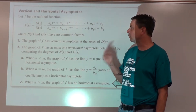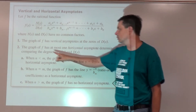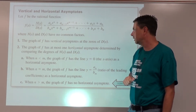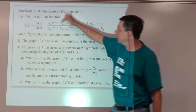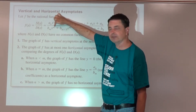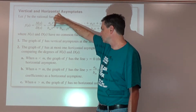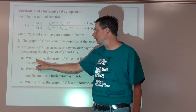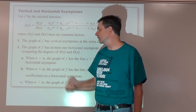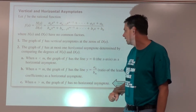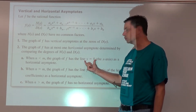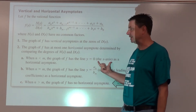In terms of horizontal asymptotes, the graph of f has at most one horizontal asymptote, and it is determined by comparing the degree of the numerator and the degree of the denominator. Most of the time you'll find that the degree of the numerator is less than the degree of the denominator, in which case we have a horizontal asymptote at y equals zero — also known as the x-axis.